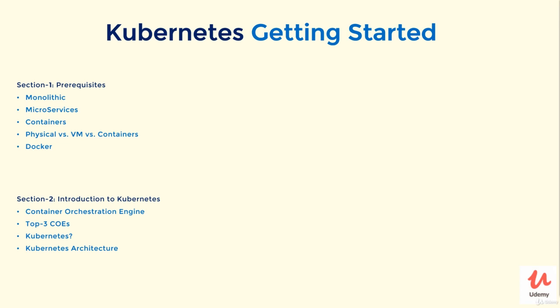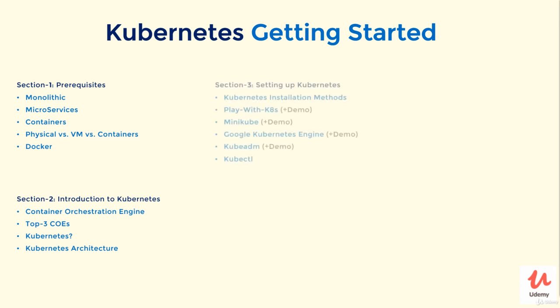In section two, I'll introduce you to Kubernetes — we'll discuss what Kubernetes is, its architecture, and more. After that, in section three, we'll set up the Kubernetes environment. I'll show you four different ways to set up and start using Kubernetes: Play with K8s, Minikube, Google Kubernetes Engine, and Kubeadm.